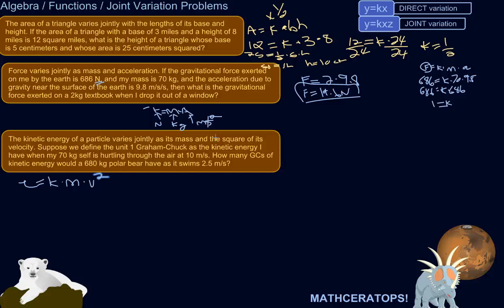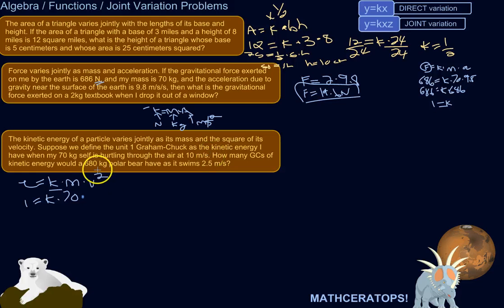How many GCs of kinetic energy would a 680 kilogram polar bear have as it swims at 2.5 meters per second? Let's figure out what the constant is first. One gram chuck of energy equals 1, so 1 is equal to some constant times my mass of 70 kilograms times my velocity of 10 meters per second squared. 10 squared is 100, so 1 equals K times 70 times 100, and 70 times 100 is 7,000. So K is therefore 1/7,000.